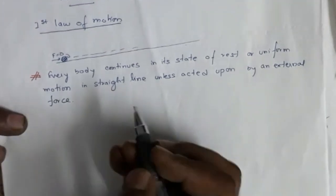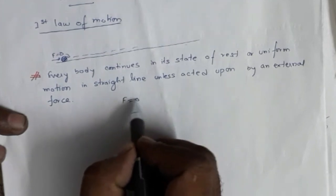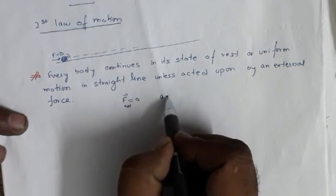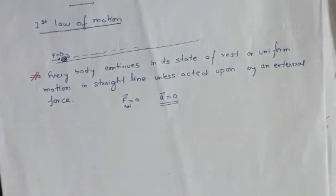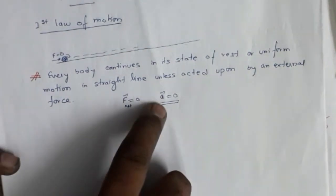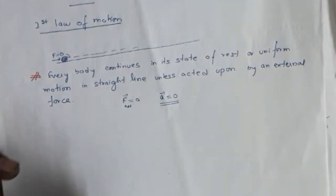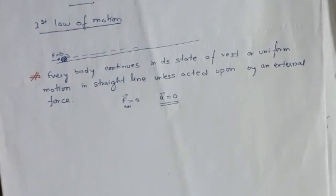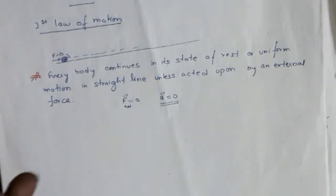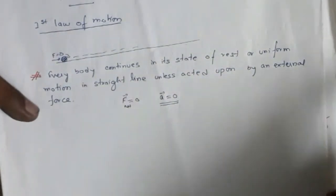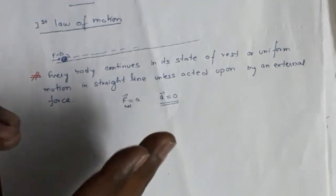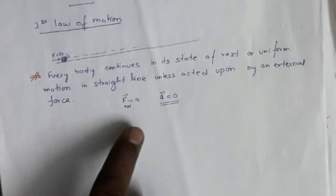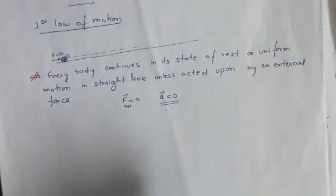From the first law we can also say that if the net force is zero, the acceleration is also zero. Acceleration is the rate of change in velocity. Velocity can change in two ways: change in magnitude or change in direction. If you wish to change either the magnitude or direction of velocity, you need to apply a force. With no force, neither the magnitude nor direction of velocity will change.